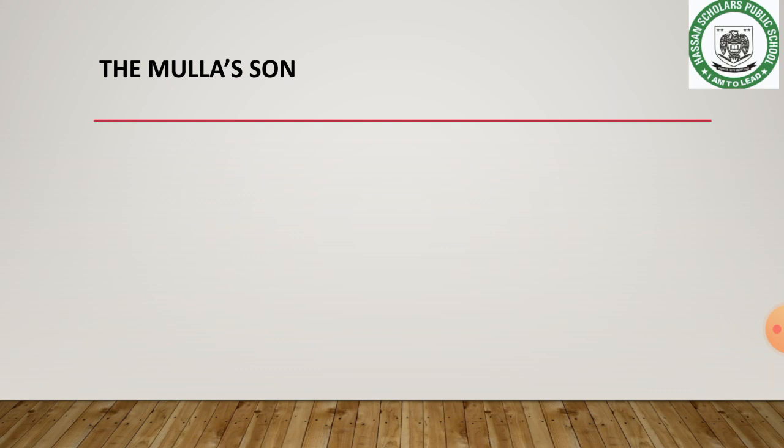Today we will discuss the words, meanings, and sentences of this unit. There are two better ways of making sentences. As I mentioned in unit number 4 as well: firstly, take the word you have learned by meaning or by sentence, and first make a sentence with it in your own language — Urdu. Then translate it into English with the help of your teacher or your parents.